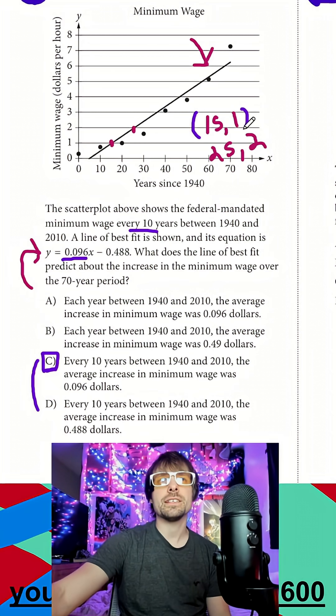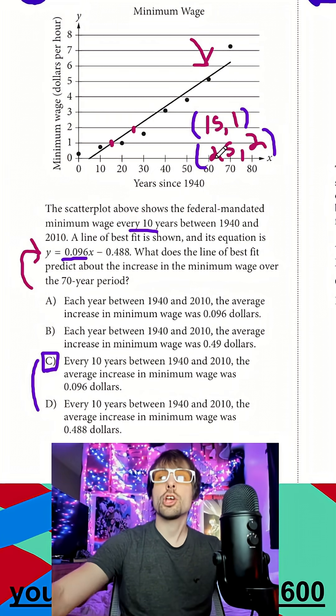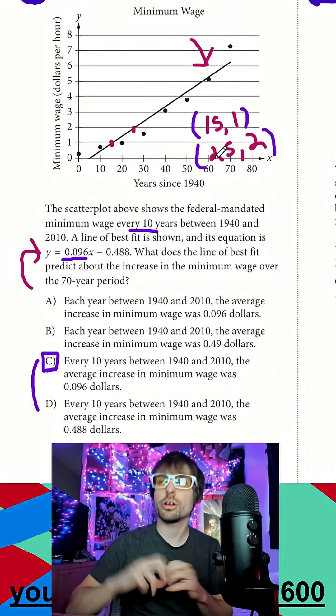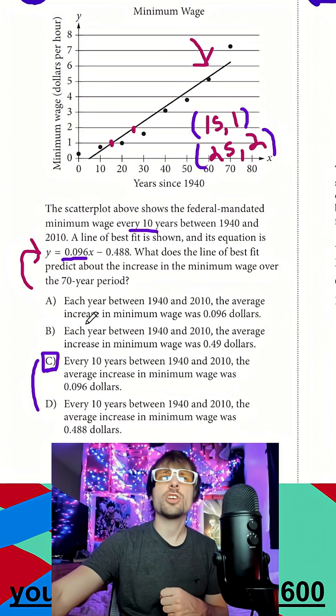Well, it can still be useful to get these two points because what they're going to show us here is over the course of 10 years, we increase a whole dollar or close to a dollar. So in C, that would actually be incorrect. Every 10 years we increase, we can kind of round that up to 0.1.